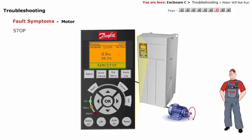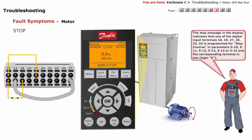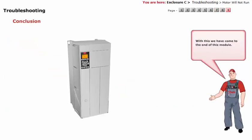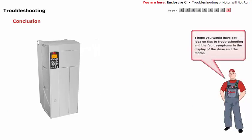Stop Stop: The stop message in the display indicates that one of the digital input terminals 18, 19, 27, 29, 32, or 33 is programmed for stop inverse in parameters 510, 511, 512, 513, 514, or 515, and the corresponding terminal is low — logic 0. With this, we have come to the end of this module. I hope you have gained an understanding of troubleshooting tips and fault symptoms in the display of the drive and the motor.